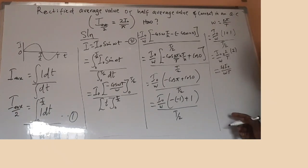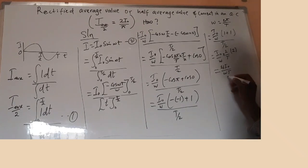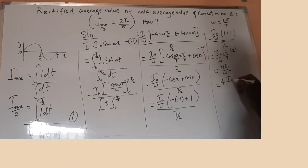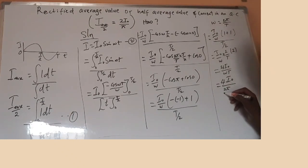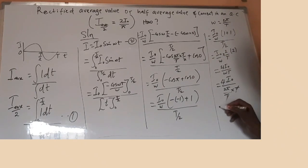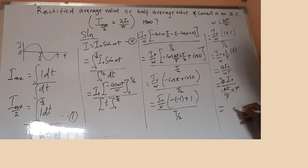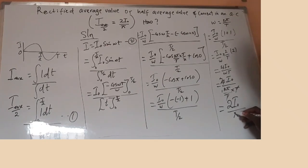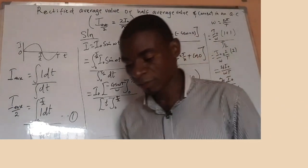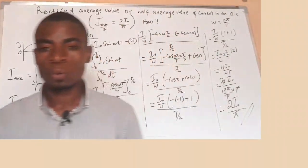We know that ω equals 2π over T, so we can substitute it: 4I₀ all over (2π/T) times T. This T will cancel that T. Then finally, two and two simplify, and we have 2I₀ all over π. And that is our final answer. Thank you for watching.